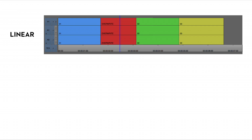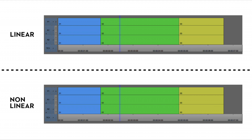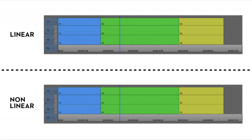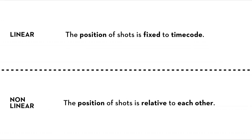A linear editing system will allow you to overwrite stuff because everything is fixed in a timecode track. So you can overwrite things with a clip or with black — you're just overwriting stuff on top of a timecode track. In a non-linear system, we can push forward other clips or shorten a clip, because the position of clips is not fixed in timecode. The position of shots is fixed to timecode in linear, and in a non-linear system the position of shots is relative to each other.